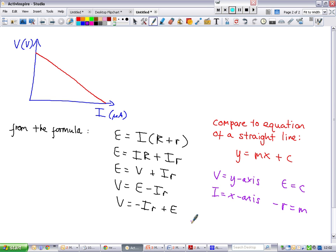So what that tells us is that the gradient of this line, the negative gradient of this line, is going to give us our value for internal resistance. And E is some form of constant, which we'll talk about in a moment.